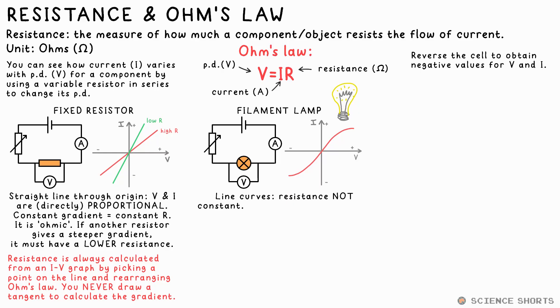At higher PDs, the current increases less and less, so that means they can't be proportional. This shows that the resistance of the metal is increasing with higher PDs and higher currents. The change in gradient shows that this is true, but we still just take a point on the line and use Ohm's law if we want to find the resistance. It's just that it does matter where you pick the point in this case. Note that we never draw a tangent on a curved IV graph. The gradient doesn't give you anything.